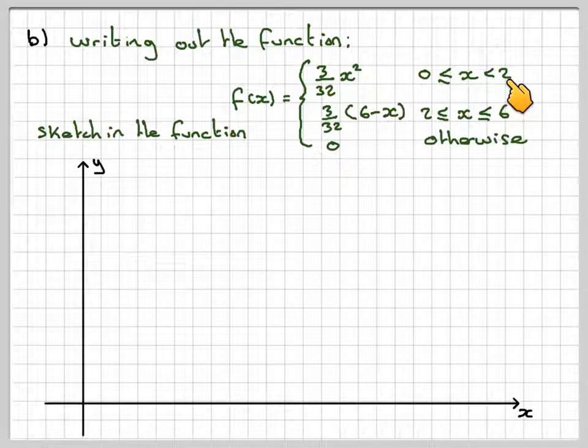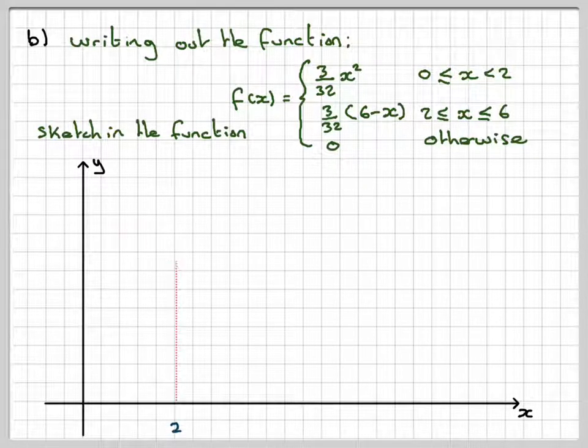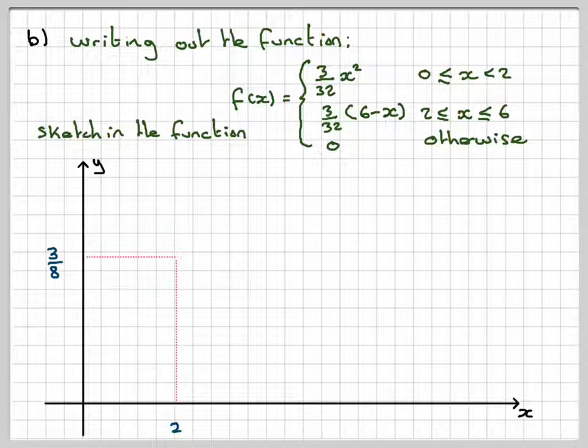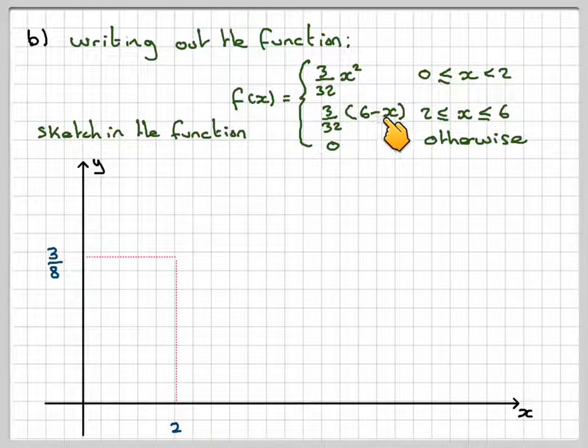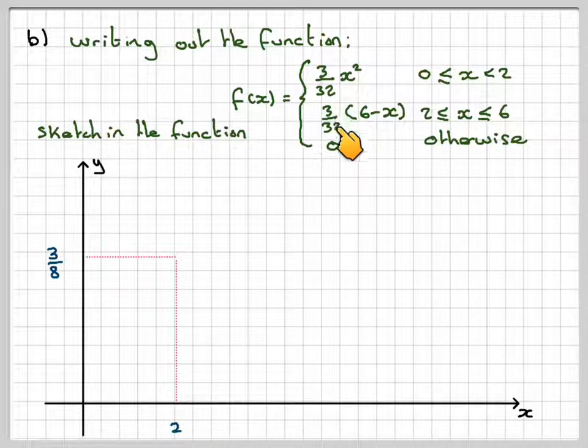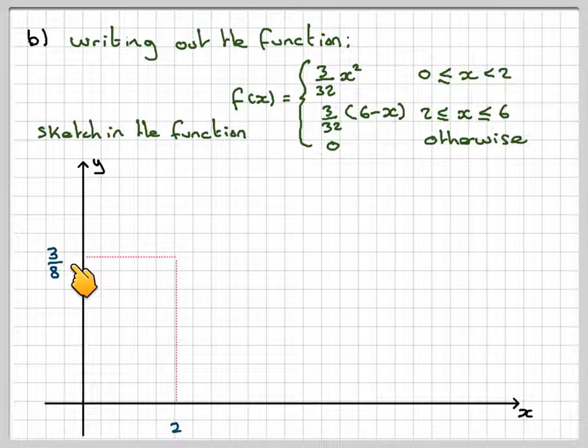This is the crucial point, at 2, the value is 3/8. So how do they get that? So 2² is 4, 4 times 3 is 12/32 which counts down to 3/8, and then if you put 2 in here you get 6 minus 2 which is 4, 4 times 3 is 12/32 which again is 3/8.